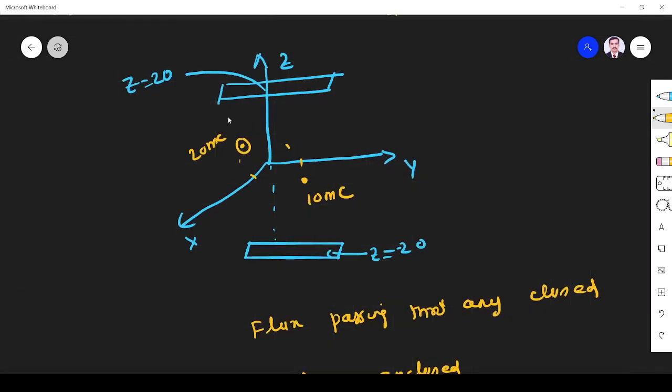So total number of flux passing through these two surfaces equals q enclosed. Here 20 millicolum, here 10 millicolum. So q enclosed is 30 millicolum. That is the total flux passing.